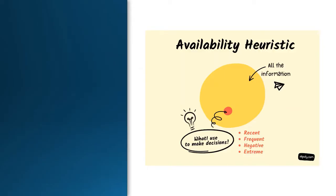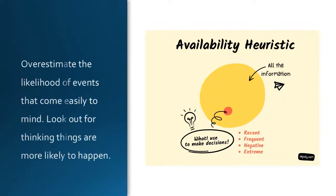The last bias we discuss here is the availability heuristic. This bias refers to the tendency to rely on easily accessible information when making decisions. For example, if someone hears about a shark attack in the news, they may overestimate the likelihood of a shark attack when they go swimming. The availability heuristic can lead to inaccurate perceptions of risk and can make it difficult to evaluate complex information.